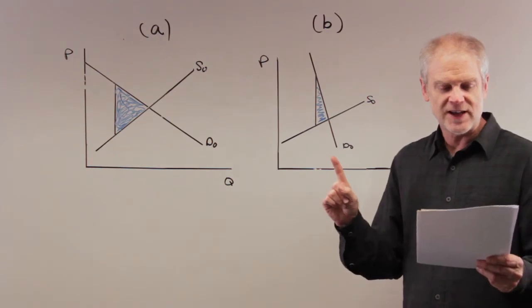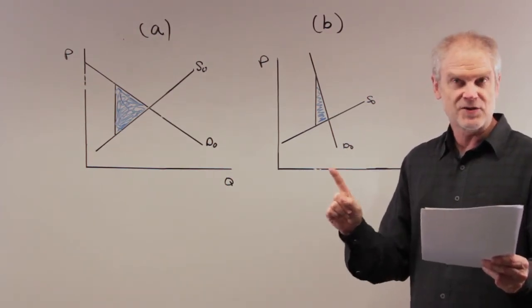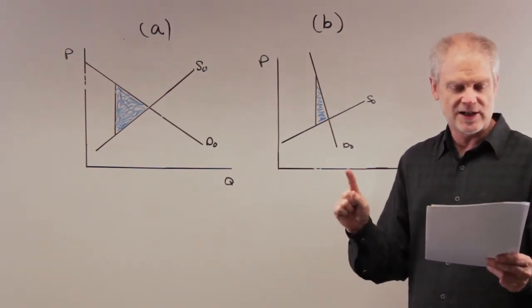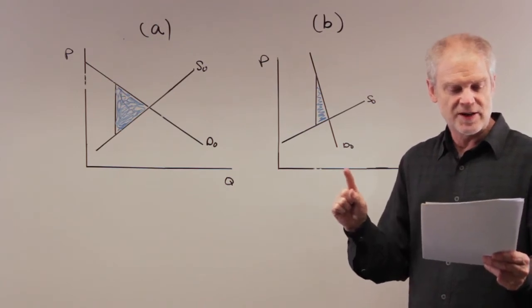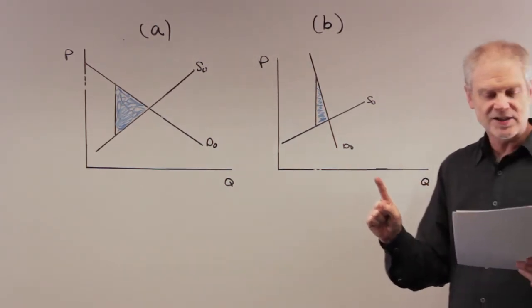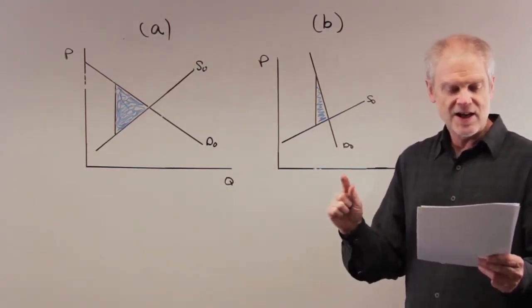B - when demand is relatively elastic, the deadweight loss of a tax is larger than when the demand is relatively inelastic. C - when supply is relatively inelastic, the deadweight loss of a tax is smaller, and then D - when supply is relatively elastic.